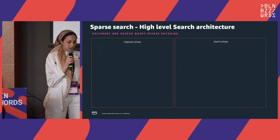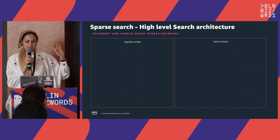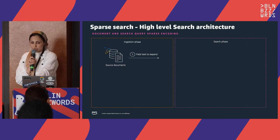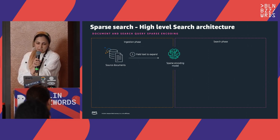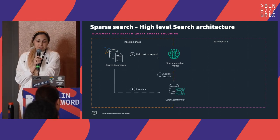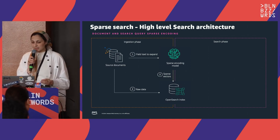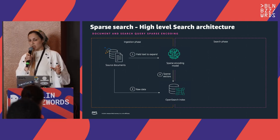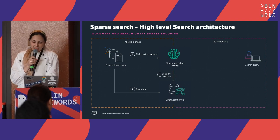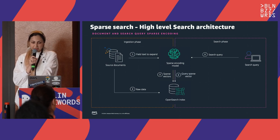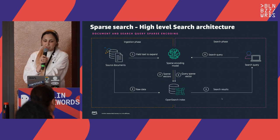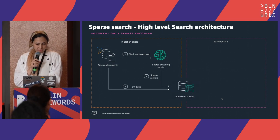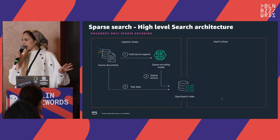For the first approach — document and search query sparse encoding — on a high-level architecture: you have the ingest phase and the search phase. For ingestion, you select which fields to expand from your document dataset, pass them through the sparse encoding model to generate sparse vectors, and store the sparse vector with your metadata into your OpenSearch index. The sparse vectors are the list of features — the newly generated tokens with their weights. At search time, you run the search query through the sparse encoding model, generate the query sparse vector, and run your search.